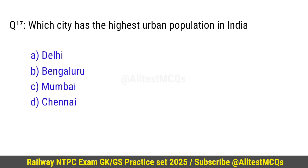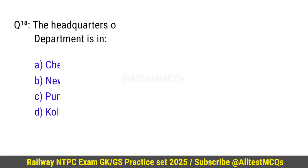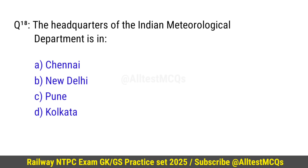Question number 17: Which city has the highest urban population in India? Correct option is C — Mumbai. Question number 18: The headquarters of the Indian Meteorological Department is in? Correct option is B — New Delhi.